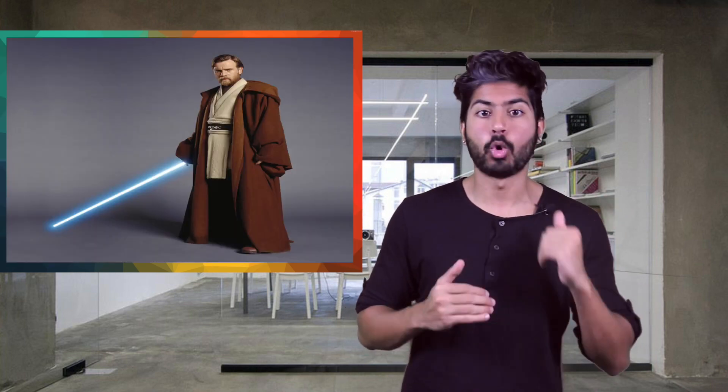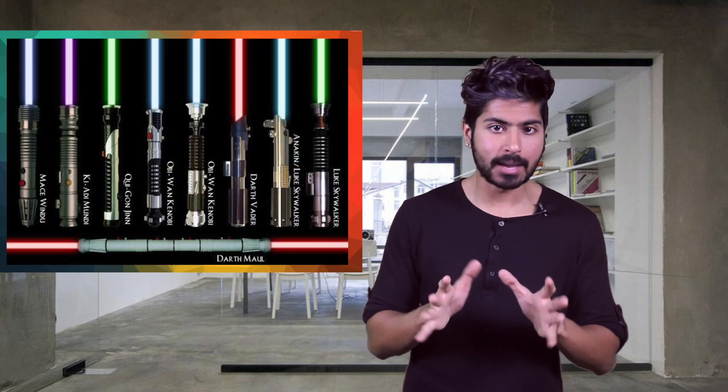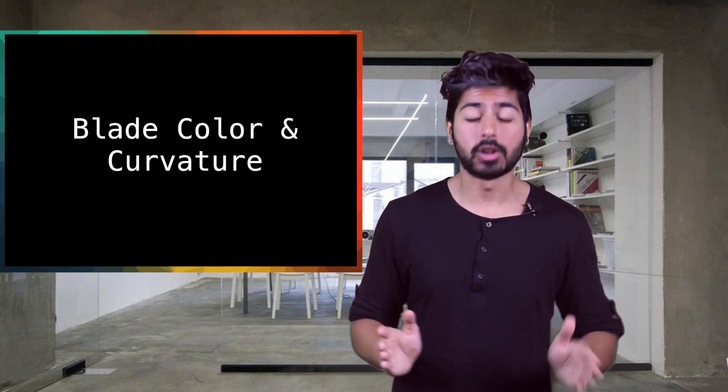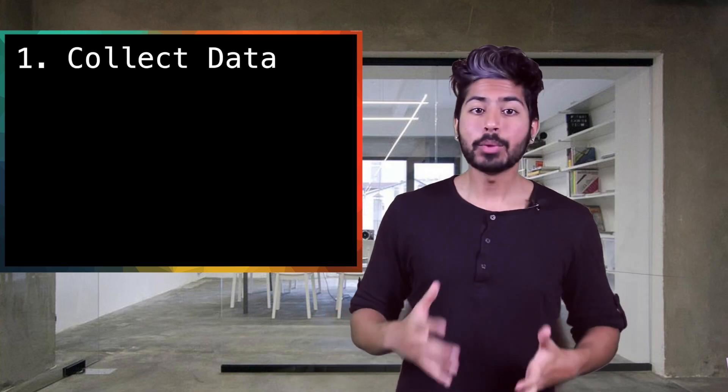So if you're trying to determine Jedi or Sith, given a dataset of lightsabers, don't pick something like weapon status as a feature. Use blade color and curvature as your features. So now that we have our dataset, the next step is to pick the model.